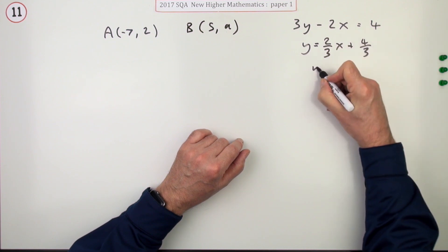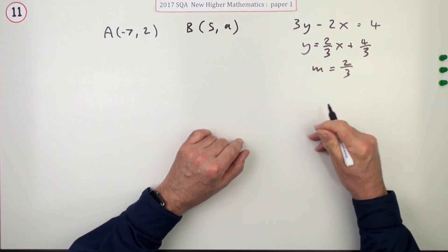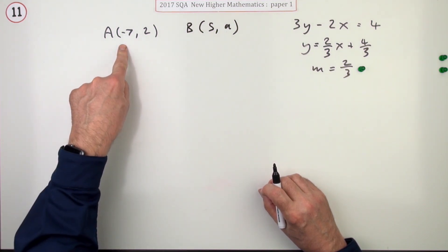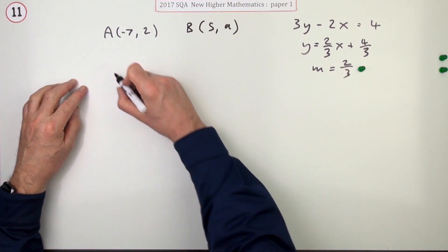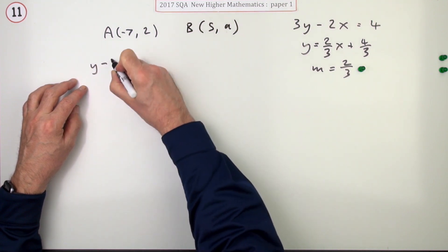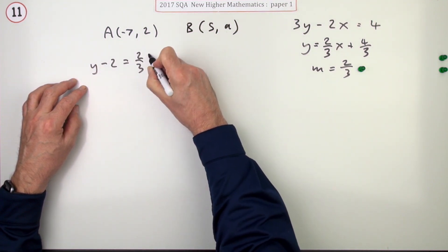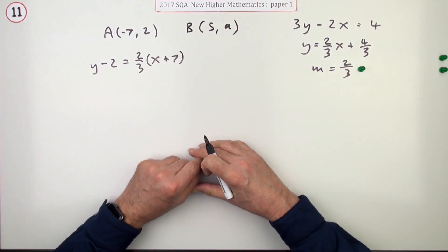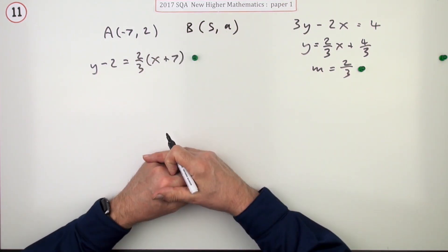Find the equation of the line through A parallel to it. So you would say y minus the y-coordinate is the gradient times x minus the x-coordinate. I think I'll just jump in with a plus 7. That would give you the second mark.